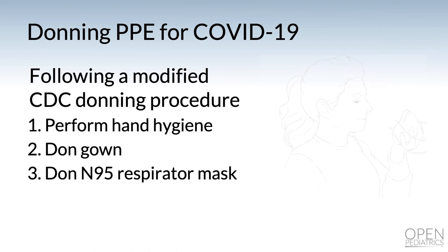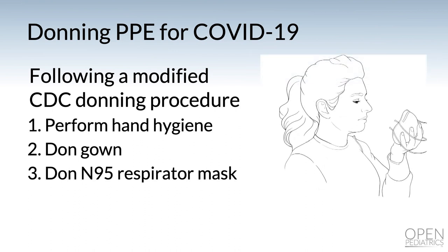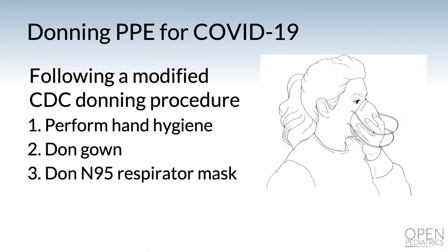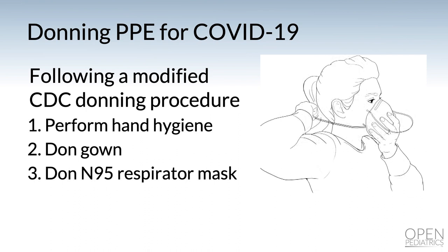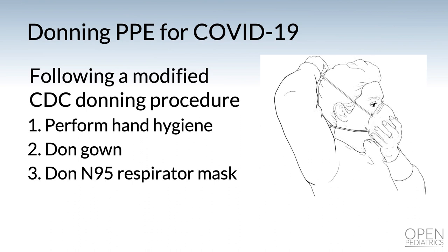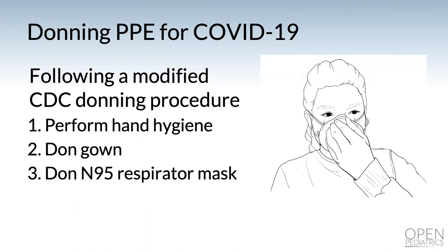Next, don the N95 respirator mask. Hold the mask in position, placing the bottom strap at the middle of your neck and the top strap at the middle of your head. Fit the flexible band to the bridge of your nose, then do a fit test by placing your hands over the mask and assessing for leaks around the edges — make sure it fits snugly to your face and just below the chin. Avoid touching your face during this step; just touch the outside of the mask, because your hands are dirty.